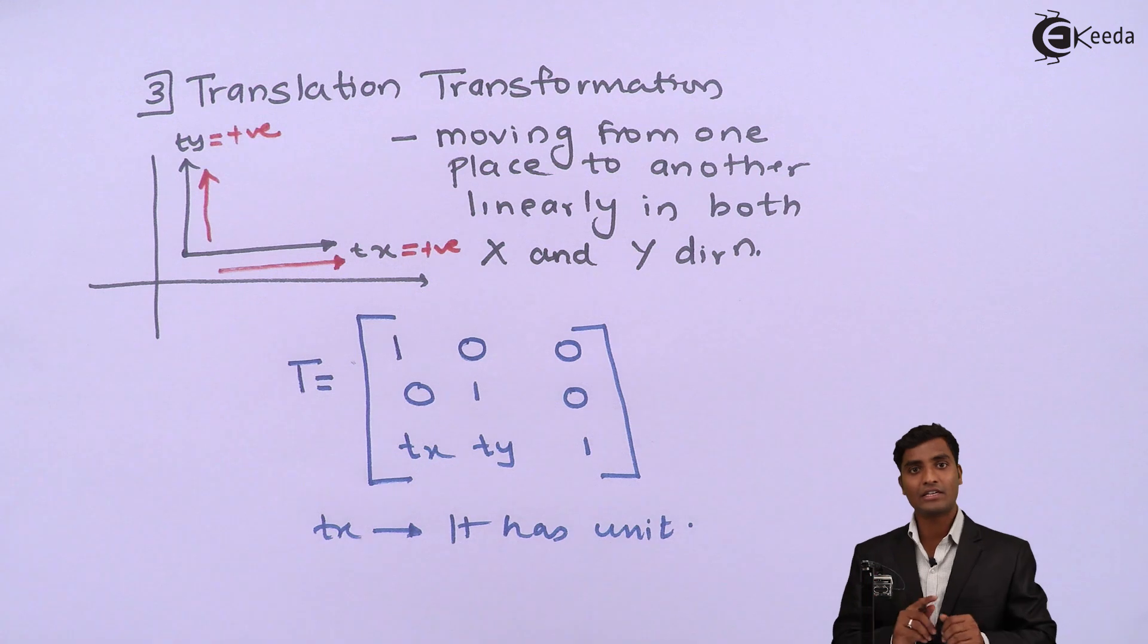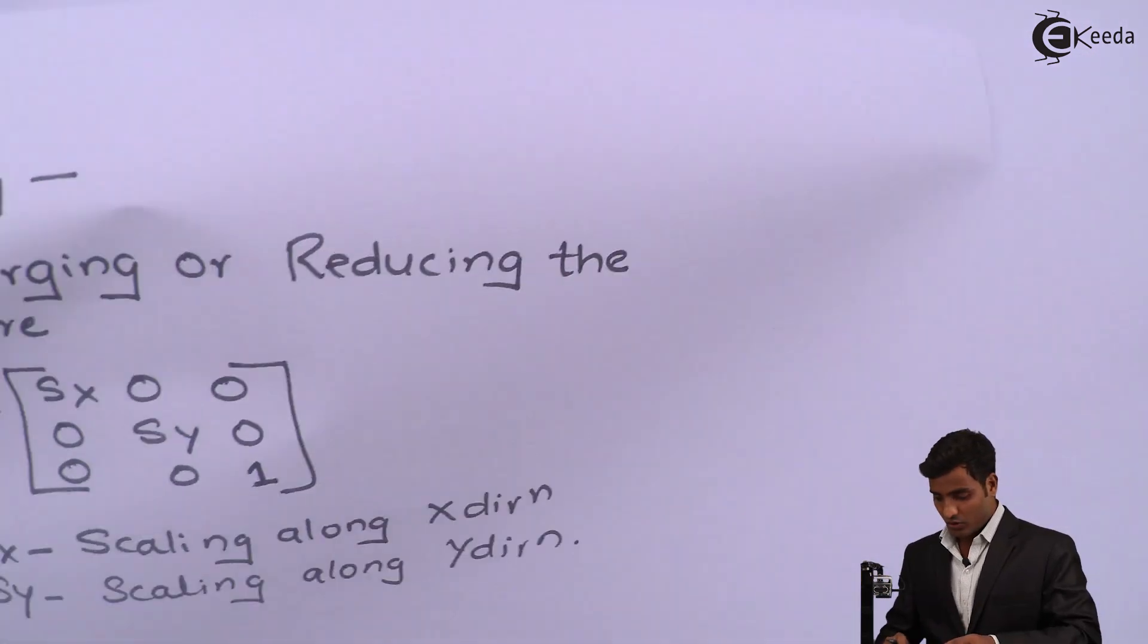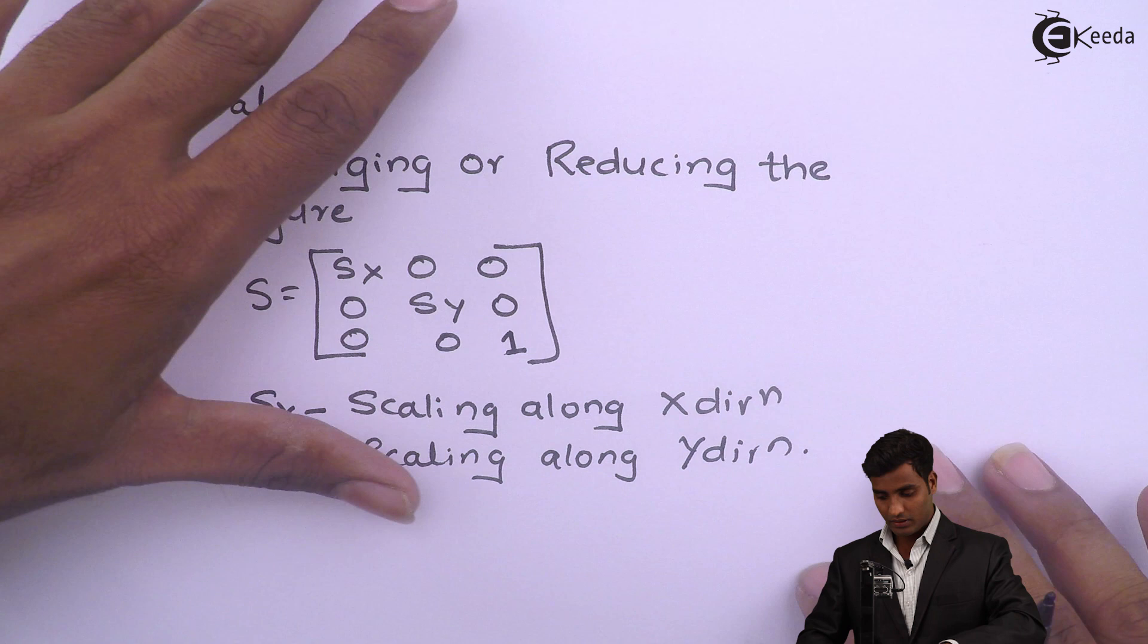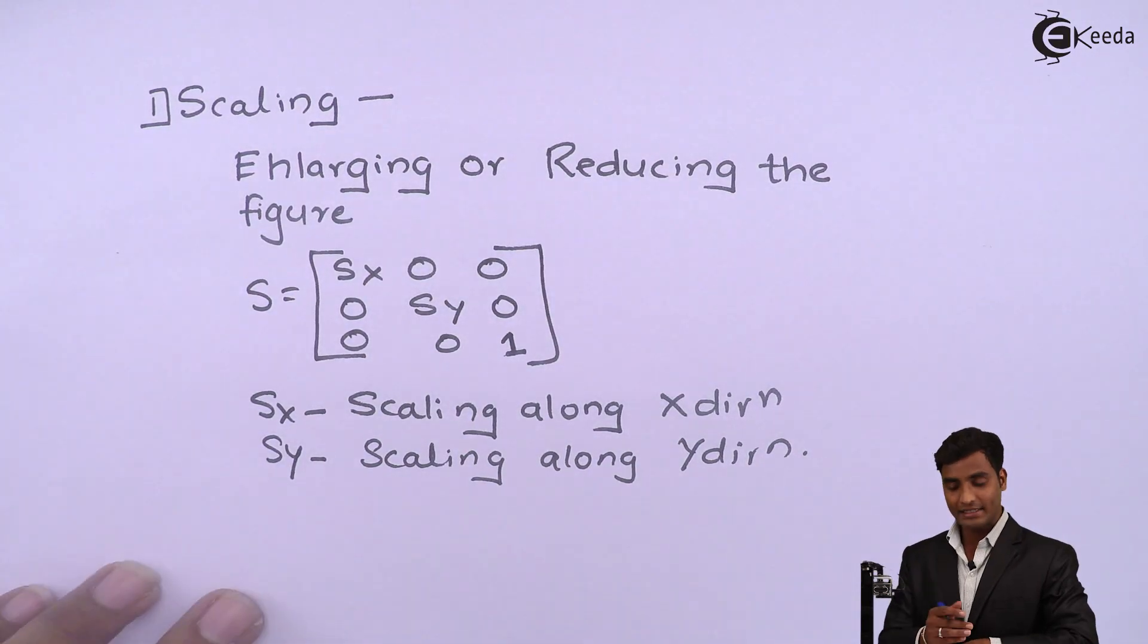But in the case of scaling, scaling is unitless parameters means we can call it as ratio also or factor also. So while solving problem we should not get confused that unit is not given or factor is given.